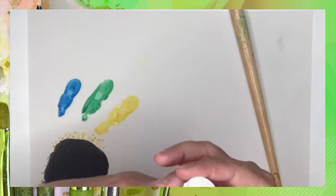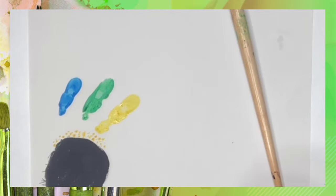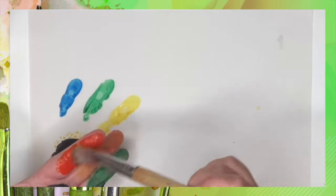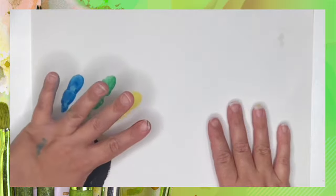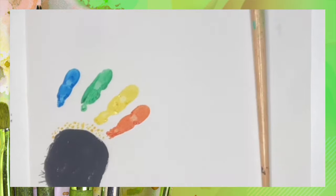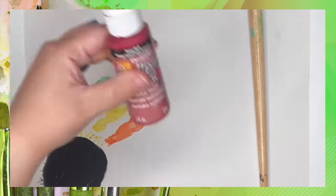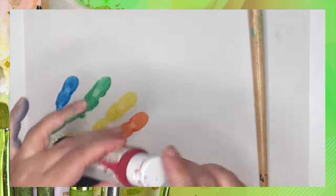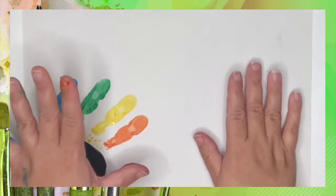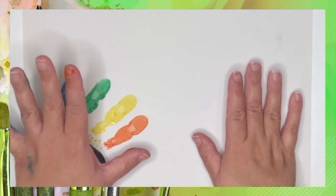And next we grab the orange paint. And we smash that one down. So for our thumb we're going to grab the red paint. And then we smash it down just like the others.